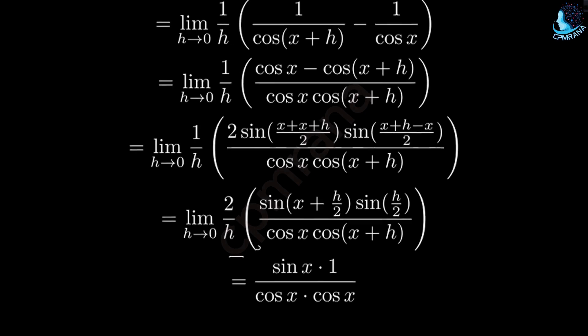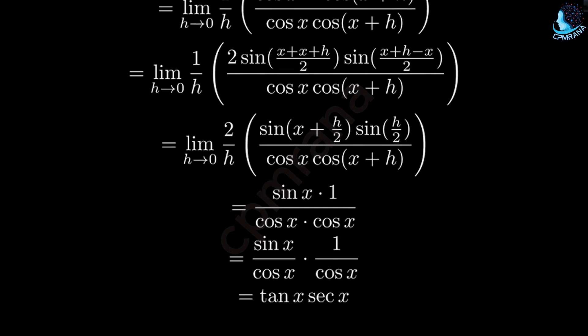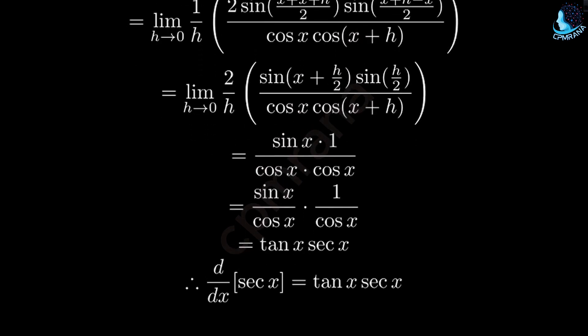Finally, we can rewrite this as sin x over cos x times 1 over cos x, which is tan x times sec x. Therefore, the derivative of secant x equals tan x times sec x.